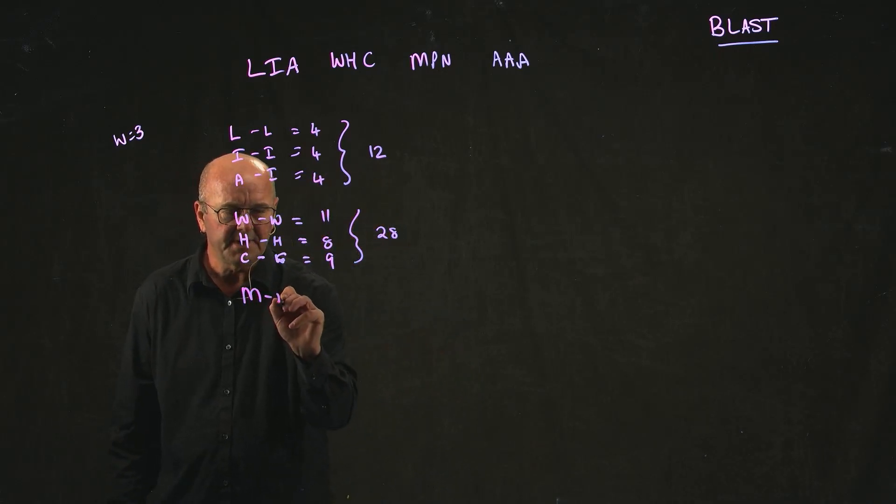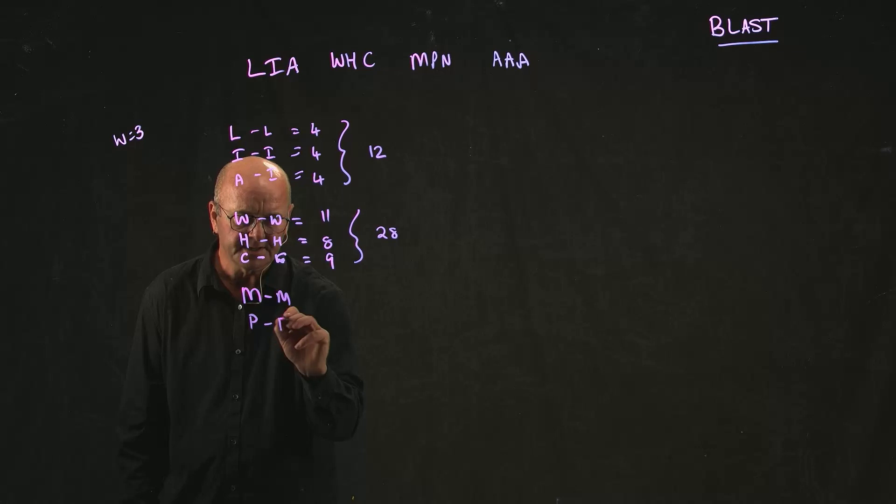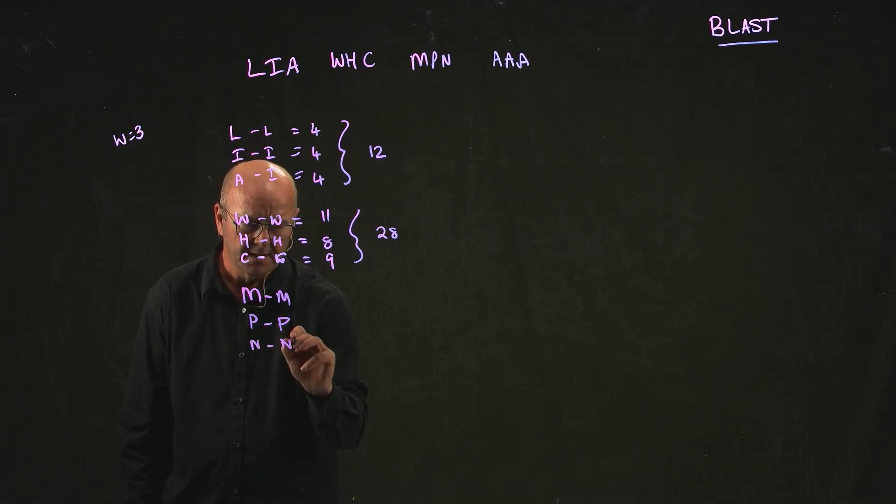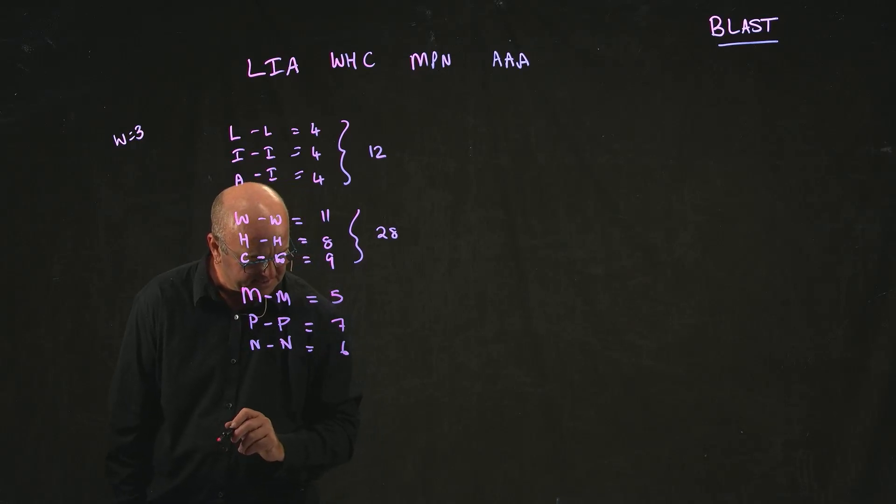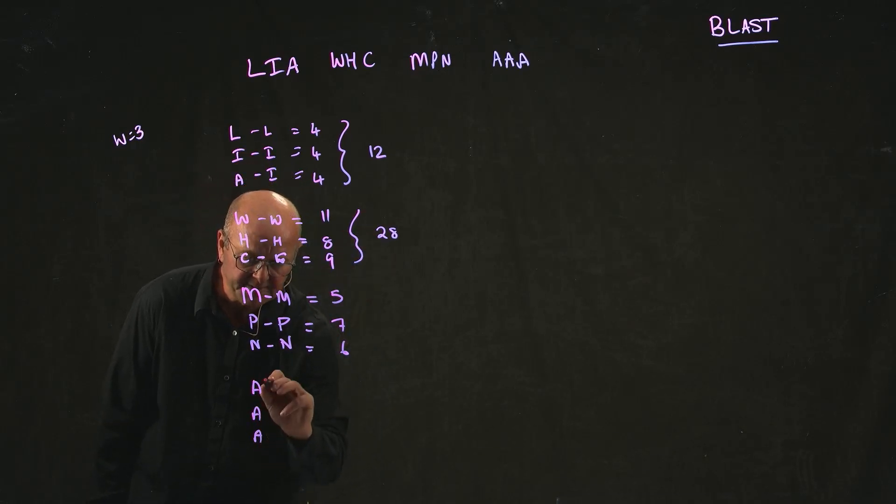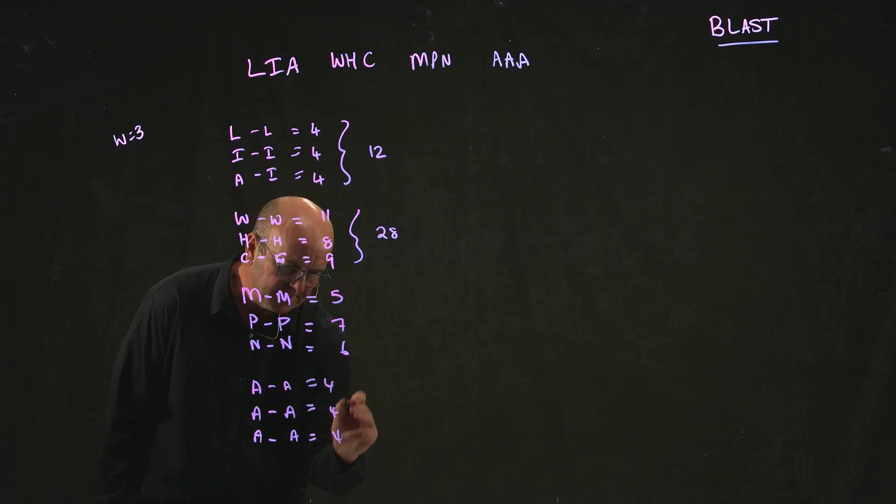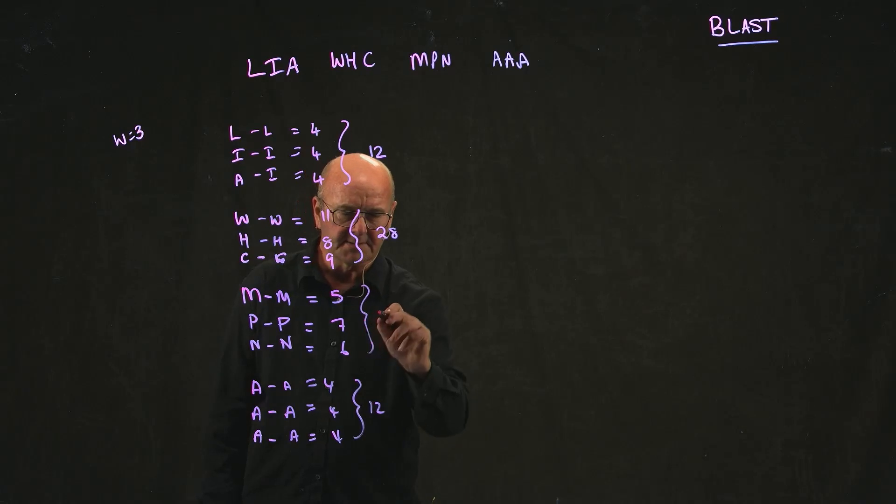We can do the same with the last two words. And our M to M gets a score of five. Our P to P gets a score of seven. And our N to N gets a score of six. And then our last word, which is just A going to itself three times, always gets a score of four. So this one adds up to twelve. And this one adds up to eighteen.